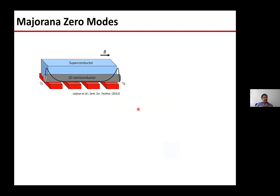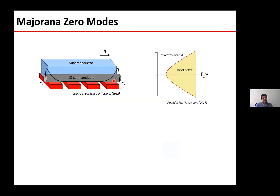To give a sense of the important parameters and how one tunes a system into a topological phase: there is a wire with gates and a superconductor that proximitizes - or induces superconductivity into - the semiconductor. Two important parameters are the chemical potential, tuned by the gates, and the Zeeman energy, tuned by the magnetic field. In a simplified phase diagram, as you increase the Zeeman field at a certain chemical potential, you go from a non-topological to a topological region.